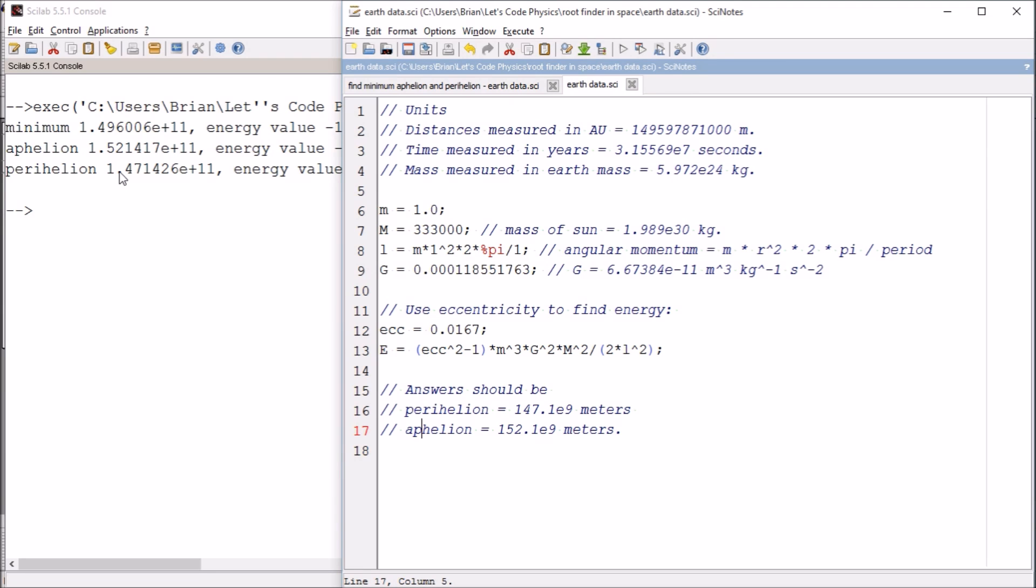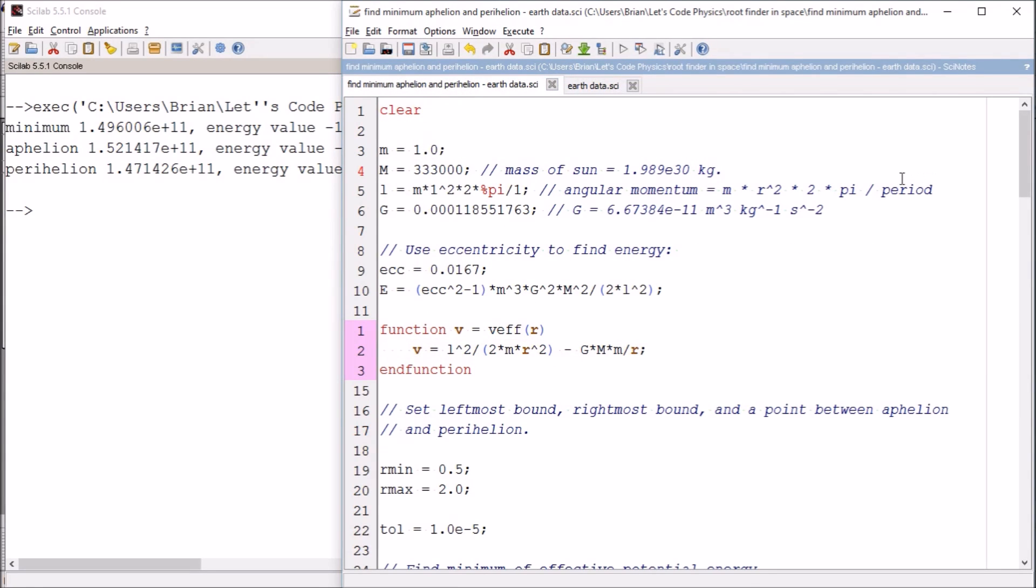or let's actually do a reverse over here. The perihelion. If I move the decimal place twice, I'll have 147.1 times 10 to the nine perihelion, 147.1 times 10 to the nine meters. So we have successfully created a code that correctly calculates the aphelion and perihelion of the earth's orbit, which is pretty cool, I think.